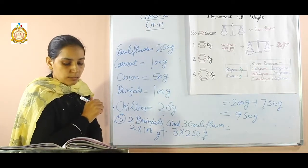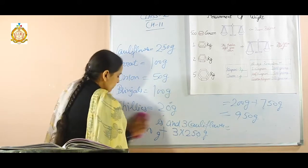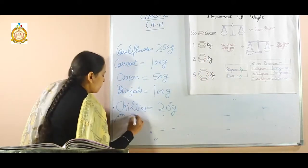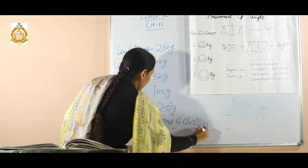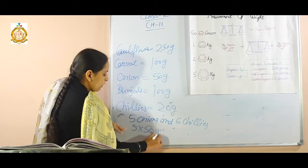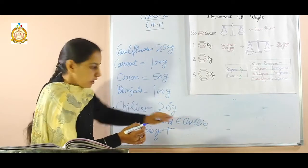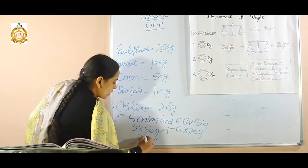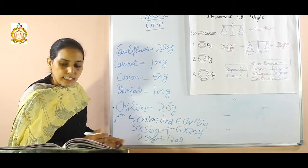In this way, you can solve the other sums. In the next sum, 5 onions and 6 chillies are there. What is the weight of the onions? That is 50 gram, so 5 multiplied by 50 gram. Plus, what is the weight of 6 chillies? 1 chilli is 20 gram, so 6 multiplied by 20 gram. It becomes 250 gram plus 120 gram, and after addition you will get the answer.